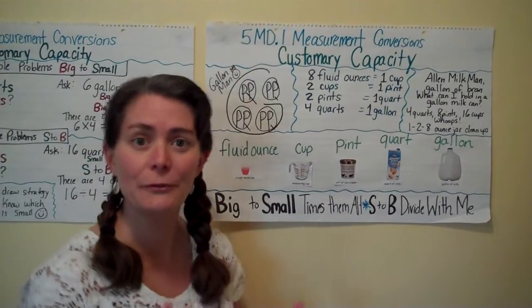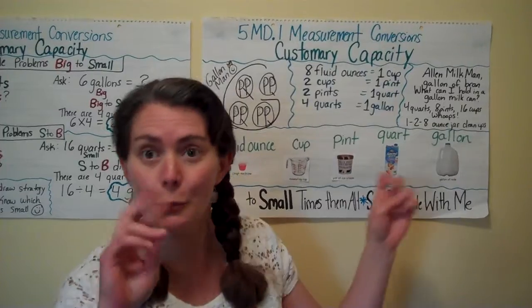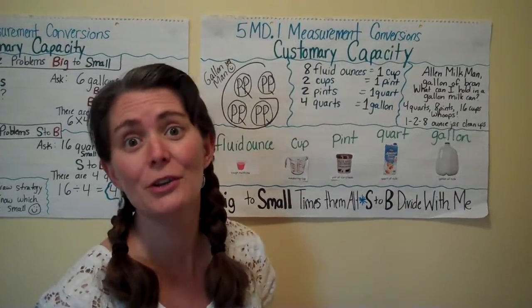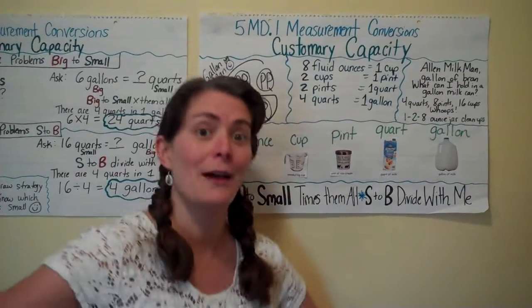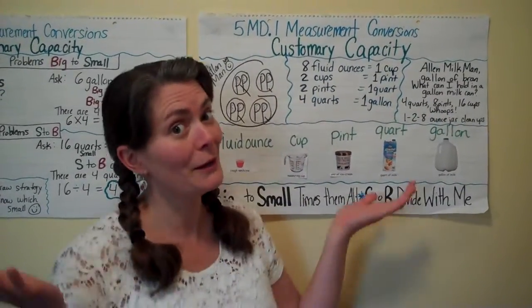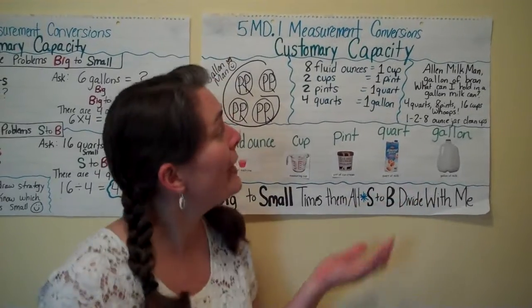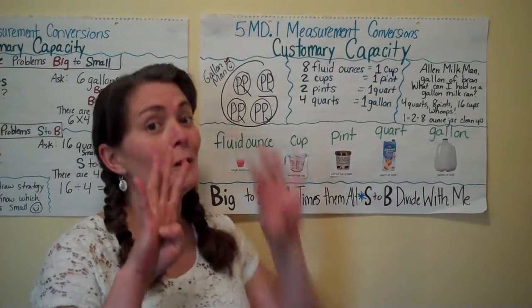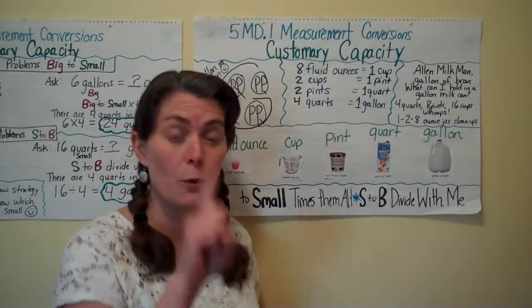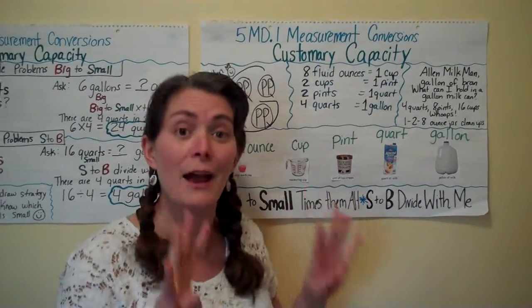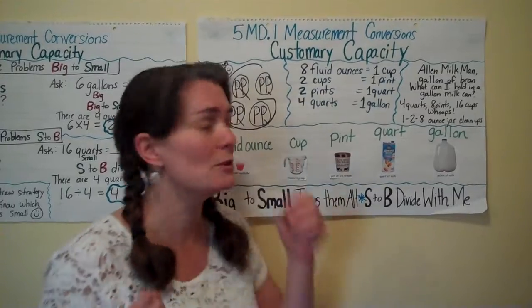There are a couple of mnemonic helpers you can use for this. You can use the Allen Milkman poem: 'Gallon of bran, what can I hold in a gallon milk can? 4 quarts, 8 pints, 16 cups, 128 ounce jars — clean up.'